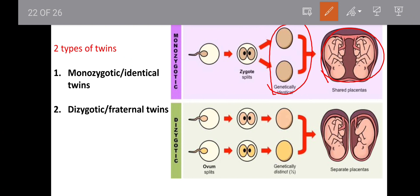Placenta means maternal tissue — it involves maternal blood, nutrients, and is a nutrient tissue acting as a barrier between the mother and fetus. Fetus means baby. So, in identical twins, two babies share a single placenta. They have a zygote that splits into two cells, and they are genetically identical.